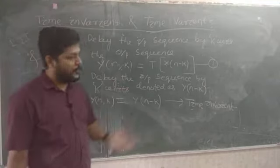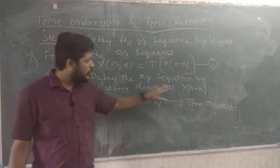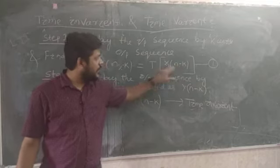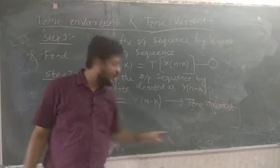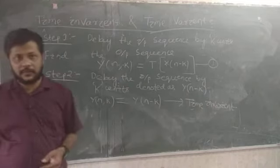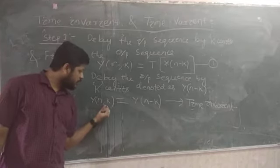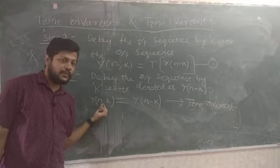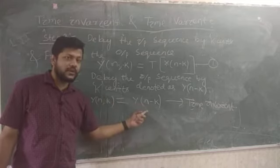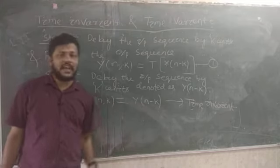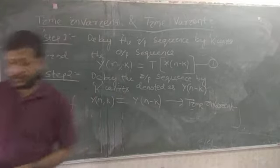To clarify: y(n, k) is the response of the system due to the delayed version of the input x(n-k). We also independently delay the output to get y(n-k). If this delayed output response equals y(n, k), the system is time invariant; otherwise it is time variant. We will now verify this with examples.